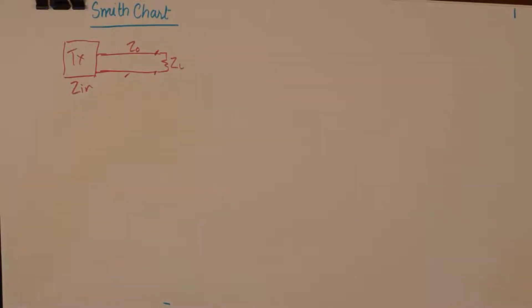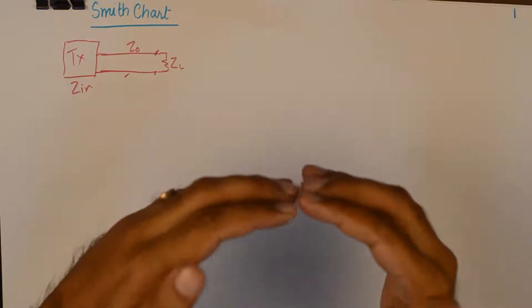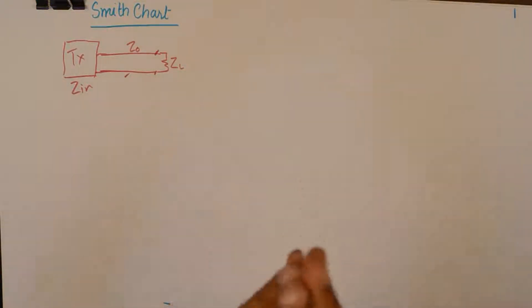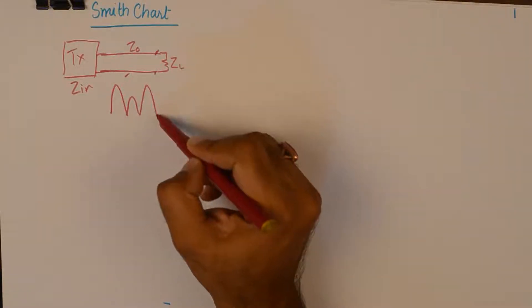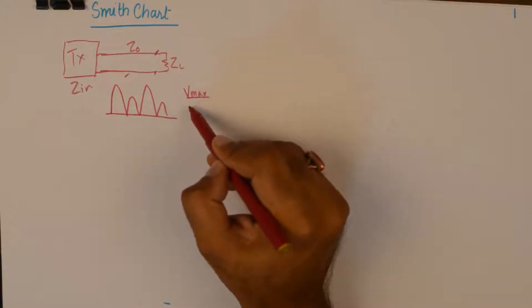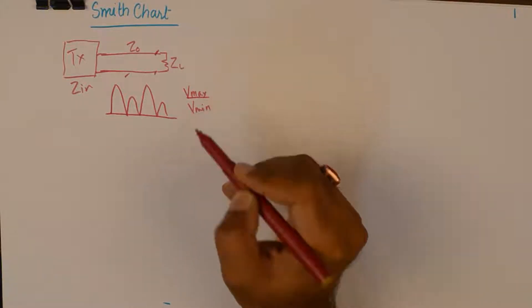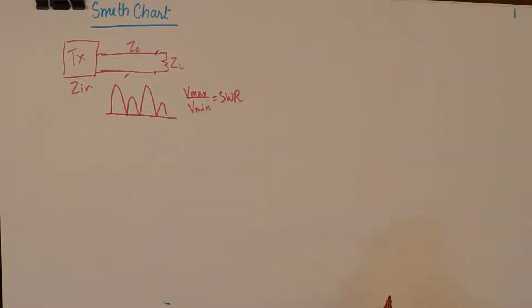Now, what happens is when the signal from both sides collide, they'll form at some point the signal will add up and at some point, the signal will be subtracted and it will form a ratio of Vmax upon Vmin on the entire transmission line, which is known as standing wave ratio. And if it is expressed in terms of voltage, it is known as voltage standing wave ratio.